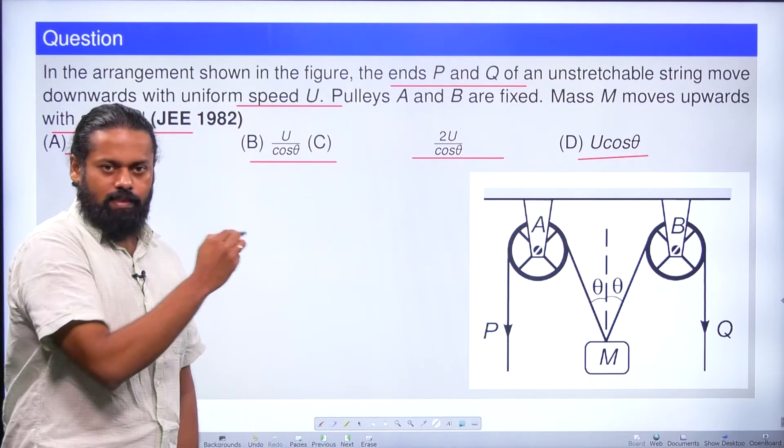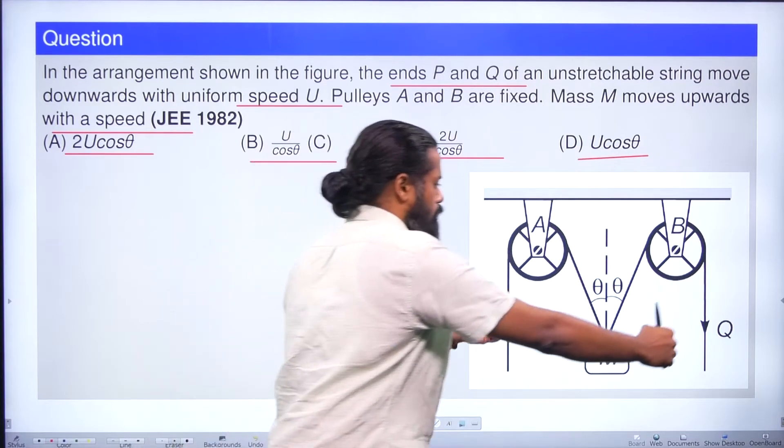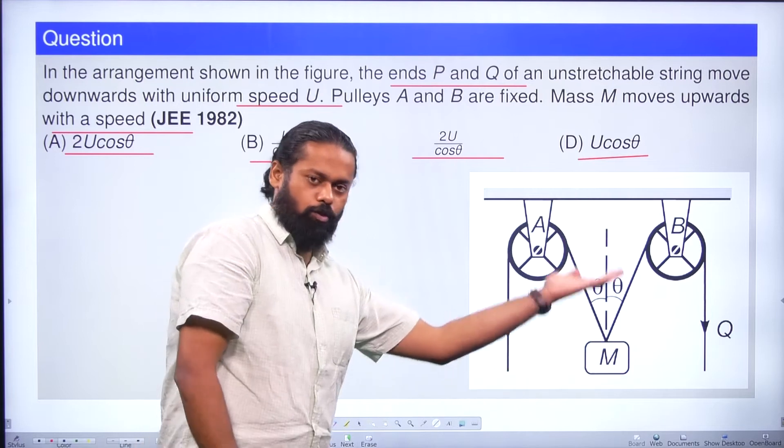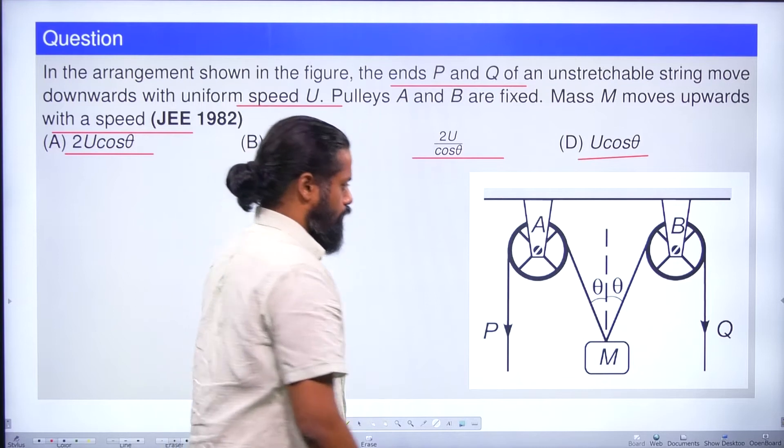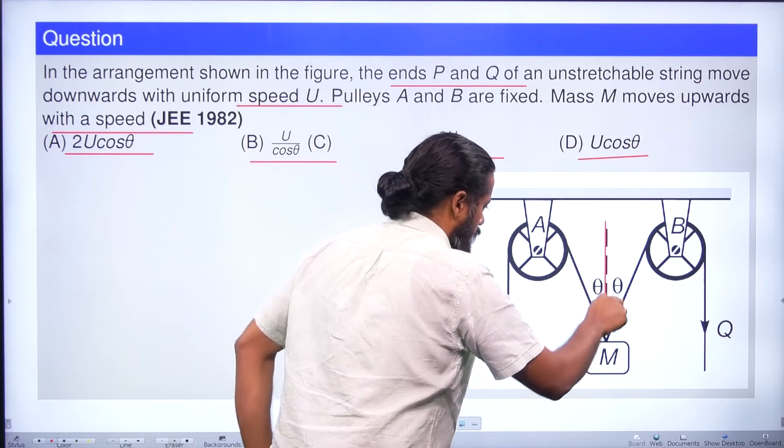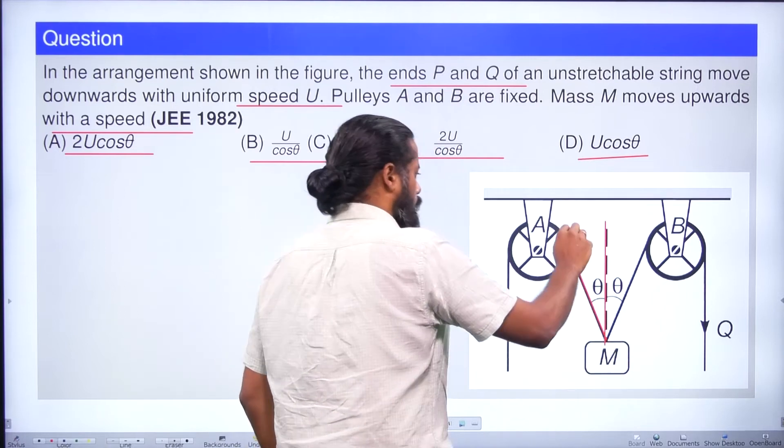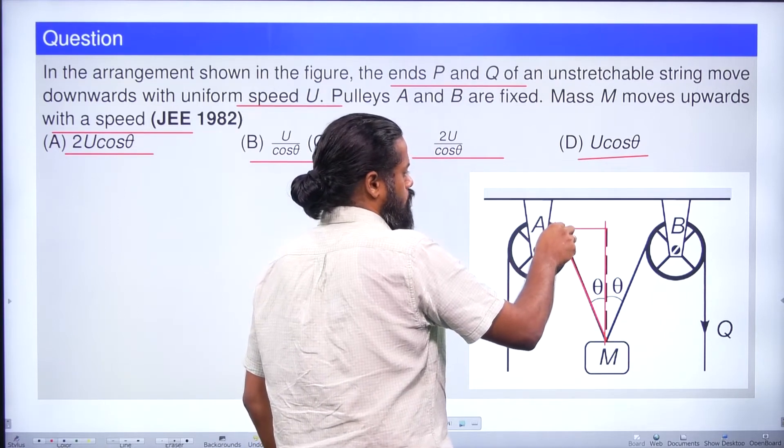Let us analyze the situation here. You can see that if you are pulling P and Q with velocity U, this mass is going to move in the upward direction. Immediately we can create a right angle triangle here. Listen very carefully - along the center line one line I'm drawing, then along the rope I'm drawing another line, and I'm going to connect these two lines.